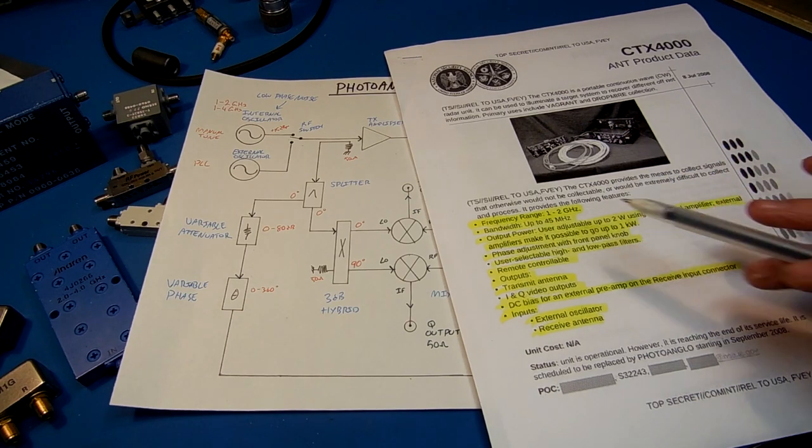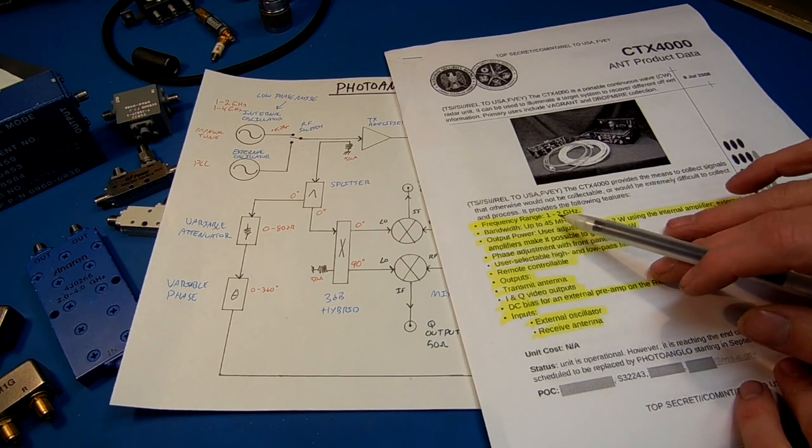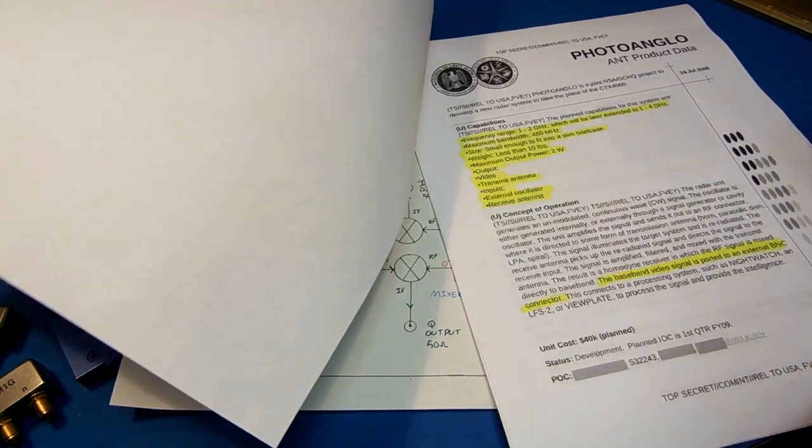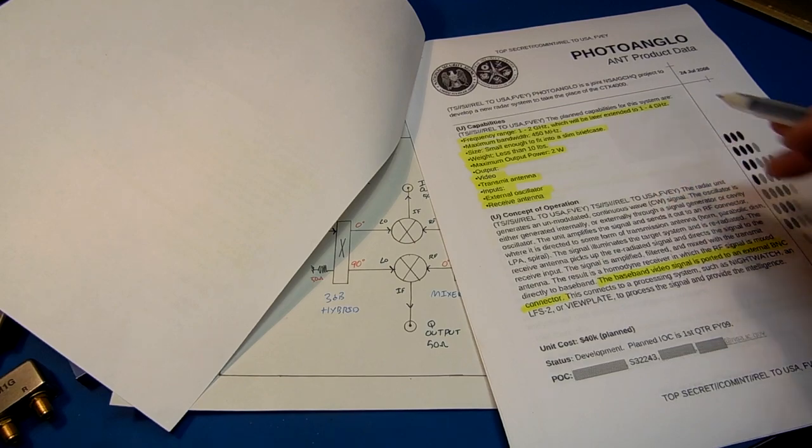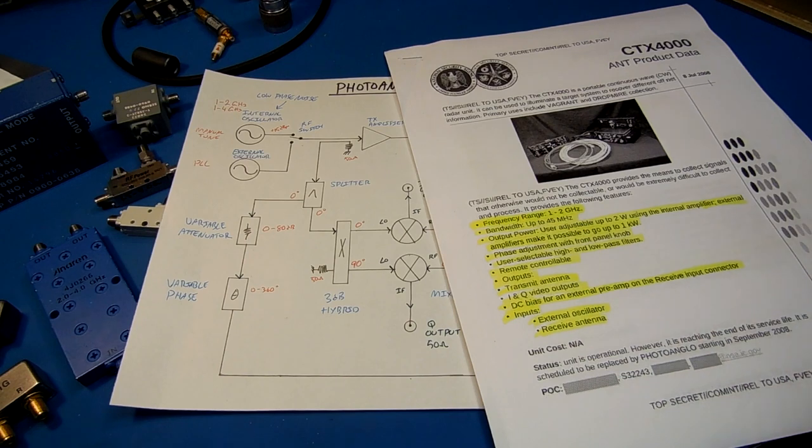but operating at a much lower frequency. CTX-4000 operates at 1-2 GHz, Photo Anglo up to 1-4 GHz. The reason for the wide frequency range is the planted bug is essentially frequency independent.